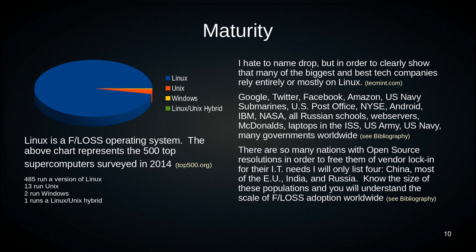Here's the name drop: Google, Twitter, Facebook, Amazon, the Navy — nuclear submarines run Linux. US Post Office, New York Stock Exchange, Android, IBM, NASA. All Russian schools starting in 2007 migrated to Linux. 67% of web servers. McDonald's is a huge Linux user. The laptops in the International Space Station now run Linux — they used to run Windows XP, but there was a problem. The 3D printer up there that they use to make things when they break also runs Linux. The US Army, US Navy — citations are in the bibliography as there were too many to list here.